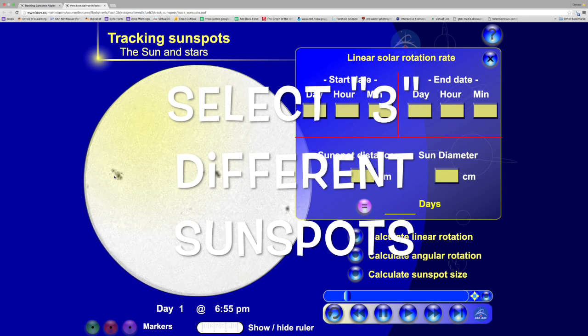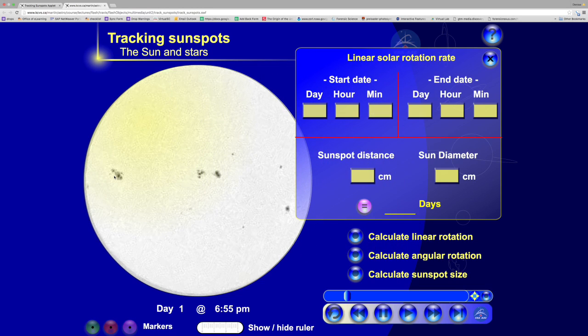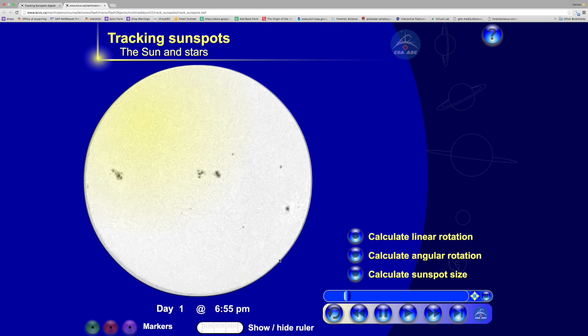This is how you do this. Again, you're going to be doing three spots, but I'll just demonstrate by doing one. We're going to take this marker, place it on the Sun, and place it on this one sunspot because it's the most obvious.